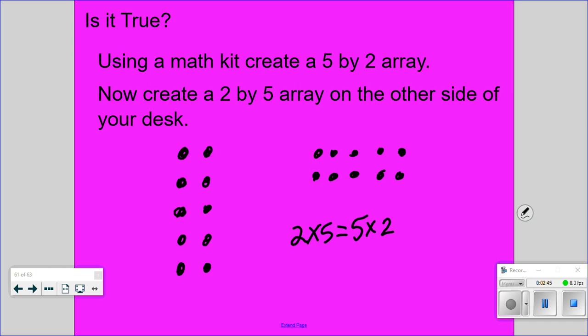2 times 5 is equal to 5 times 2. Now, we've known that. Right, we've done the commutative property. We've learned that we can rearrange the groups and my total doesn't change. Ashlyn told us that the total of each array is 10.